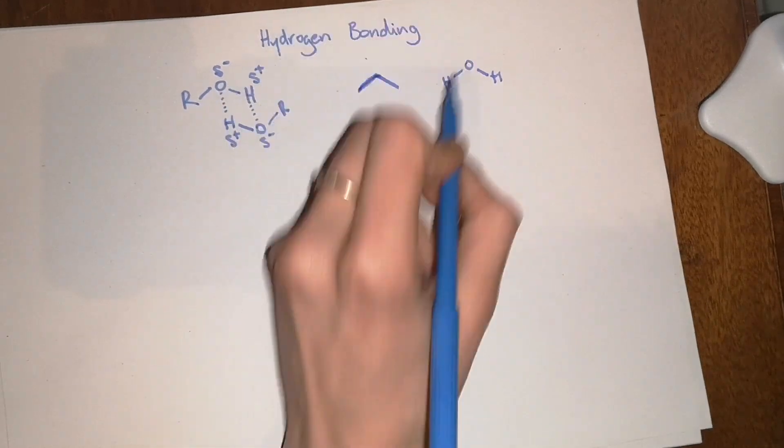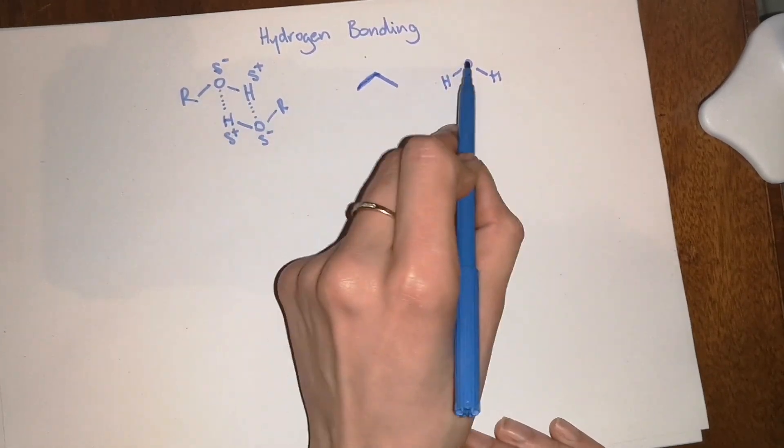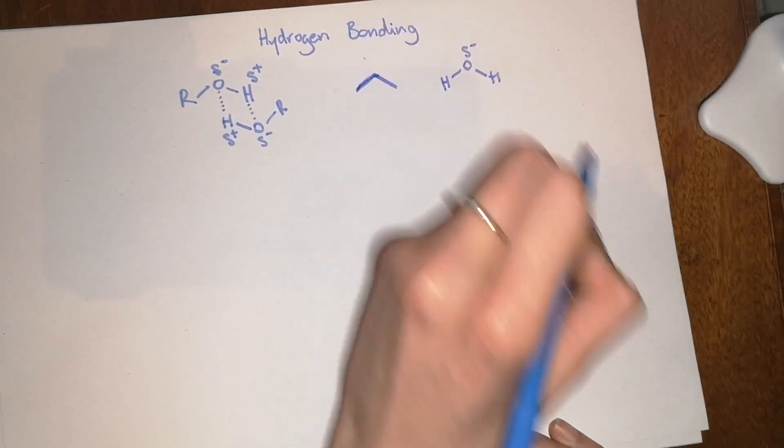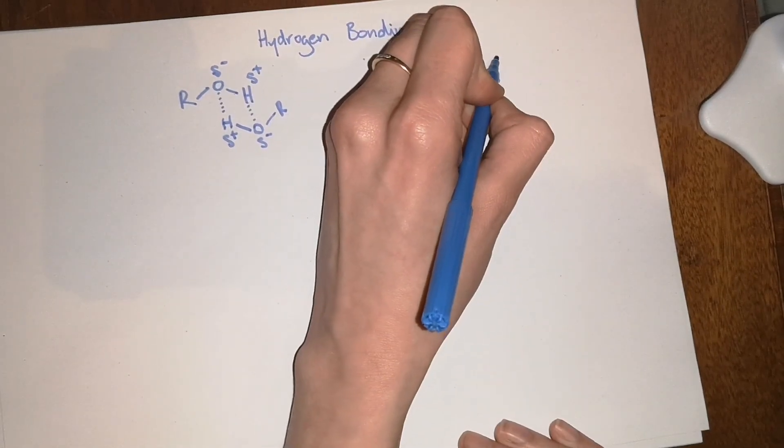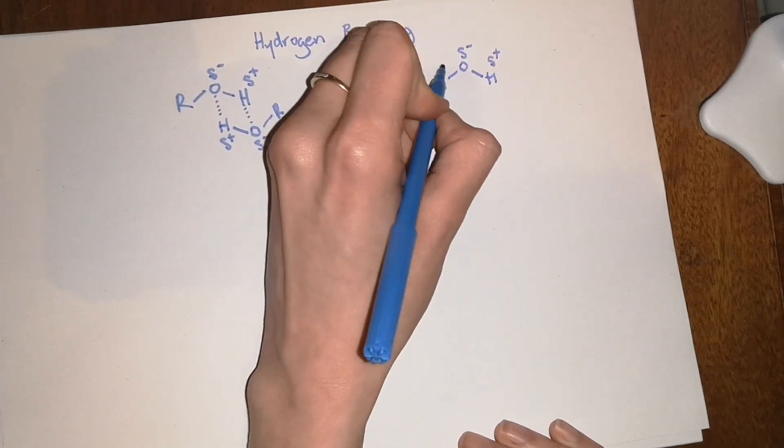So similar to in the case of an alcohol, in a water molecule, you have partial negative charges on the oxygens and you have partial positive charges on the hydrogens.